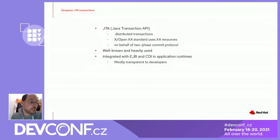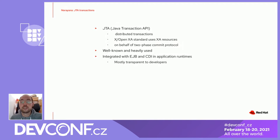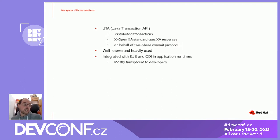The next module is JTA transactions, which is an API on top of Java for working with transactions. It works with XA resources based on the standard two-phase commit protocol used to manage the participants. All of that is well integrated into many runtimes and transparently used by developers, even without them knowing there are these standards or APIs in the background.